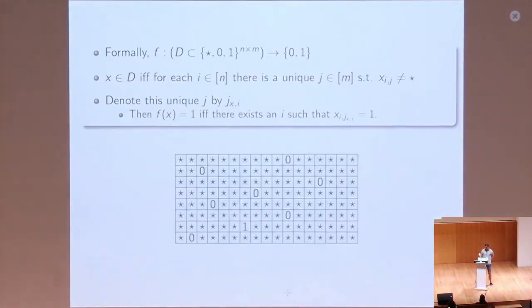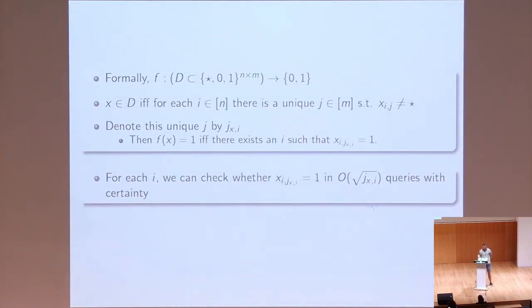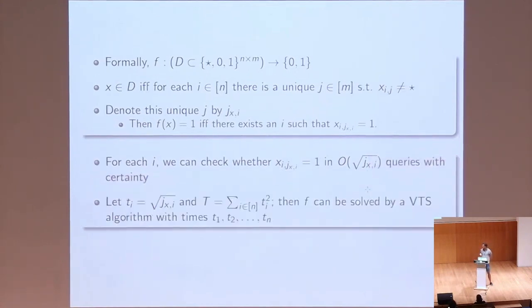It's achieved basically by a variant of Grover's search. So we find the value of the p-search in each row with certainty in square root of the position. And that gives us an instance quite useful where the variable time search algorithms are quite useful, because for different rows, we can have widely different running times, different times required by the algorithm to find the answer, and we can combine these solutions by a variable time search algorithm with these times which are themselves dependent on the input x.